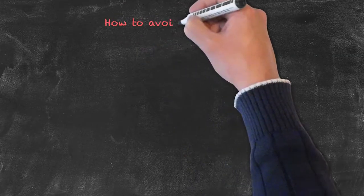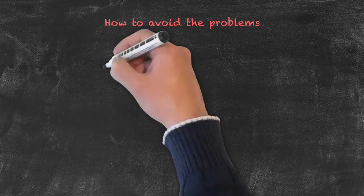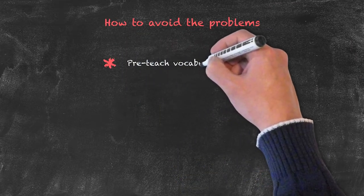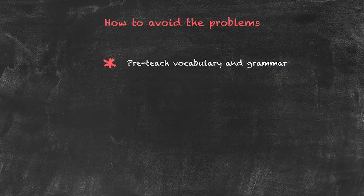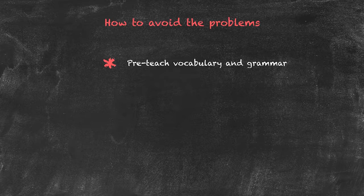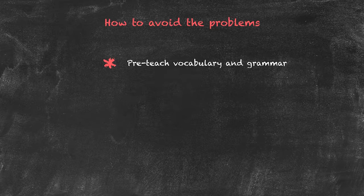Some of the ways in which we can avoid these problems occurring in the first place is to pre-teach the vocabulary and grammar that's going to be required in the particular activity. Having said this, it doesn't mean that if we think about a particular article they're going to read, or a listening activity they're going to listen to, they have to know every single word — but they do need to know a certain number of words in order to actually make sense out of it.